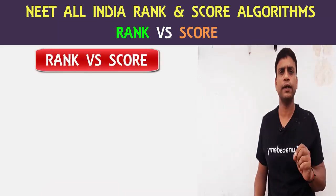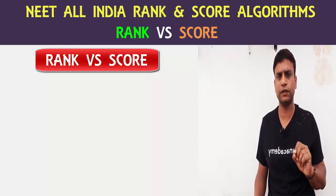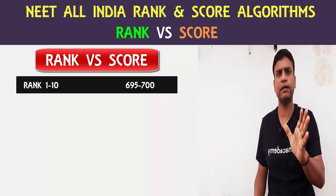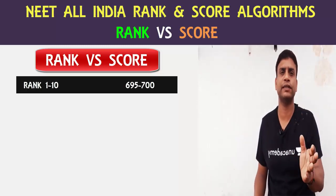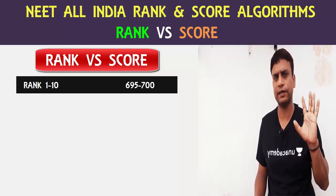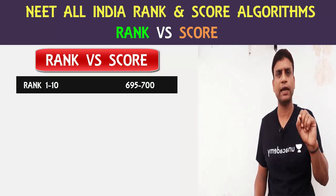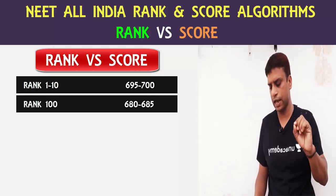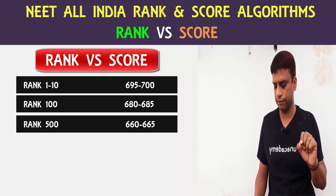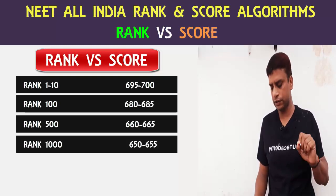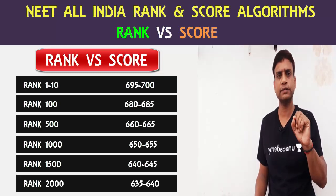Now let's look at how All India Rank is defined for particular scores. All India Rank 1 corresponds to around 720 marks. Rank 10 covers 695 to 700 marks — just a 4 or 5 mark difference. Rank 100 is around 680 marks. Rank 1,000 is around 650 marks, and Rank 2,000 corresponds to around 636 marks.